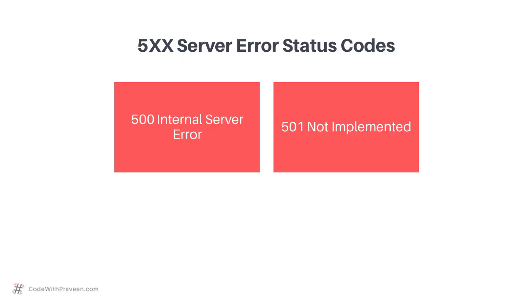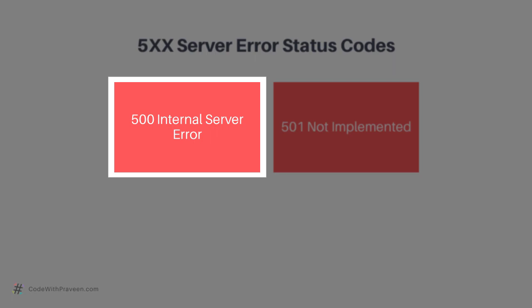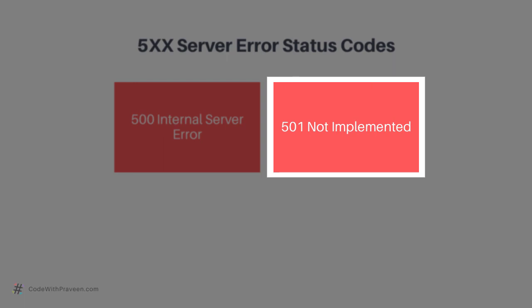Finally, we have the 5xx class used to capture server-side error codes. It is possible that sometimes errors happen on the server side as well. For instance, if there are some unhandled exceptions on the server side, the server can return error code 500 Internal Server Error. This is the most common error returned from the server whenever there is an unknown or unspecified error. If there are some features not implemented at the server side and the client has requested it, then the server can throw a 501 Not Implemented error code.